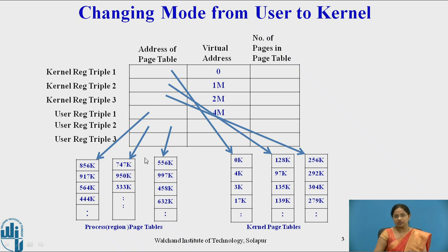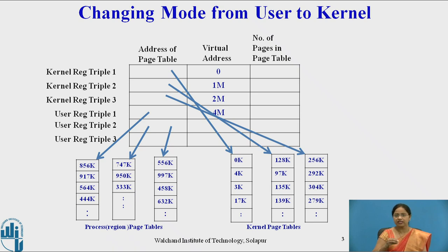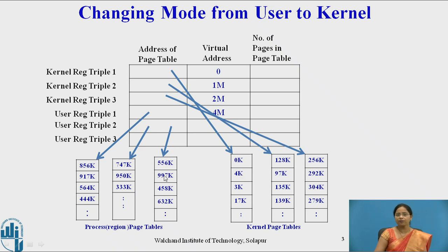When processes change mode from user to kernel or kernel to user, they must refer to the page table. The page table contains the physical addresses for the particular pages, which are located as virtual addresses in the kernel register triple. This contains the frame numbers of the physical memory for all page tables. This is how changing mode from user to kernel or kernel to user happens.